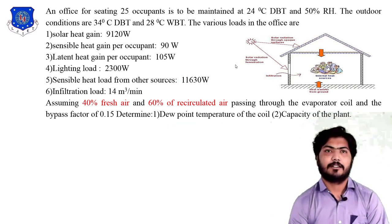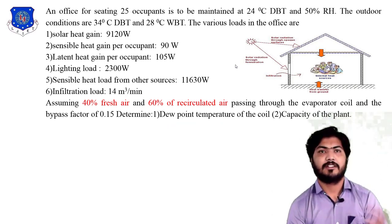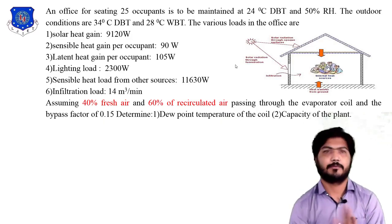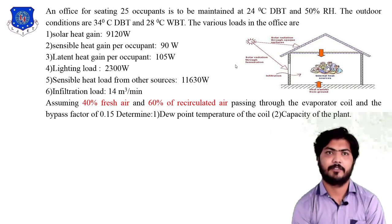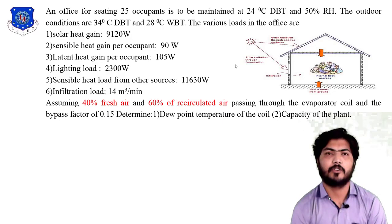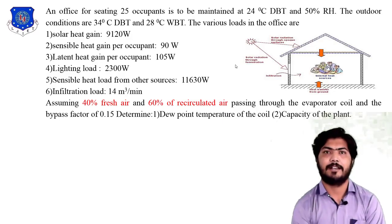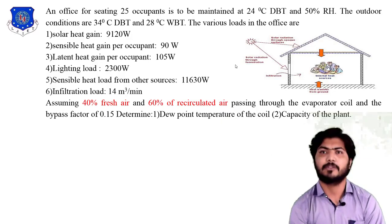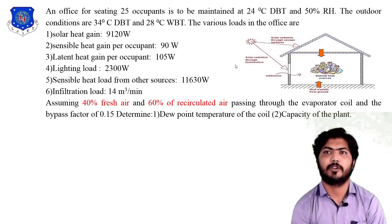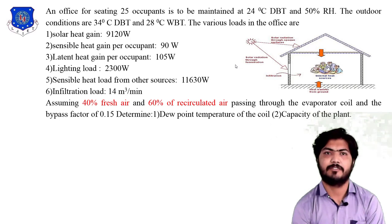Infiltration air carries both latent heat and sensible heat load, which is why the infiltration load is divided into two parts. The next condition assumes 40% fresh air and 60% recirculated air — that is the ventilation of air passing through the evaporator coil. The bypass factor of the coil is 0.15.